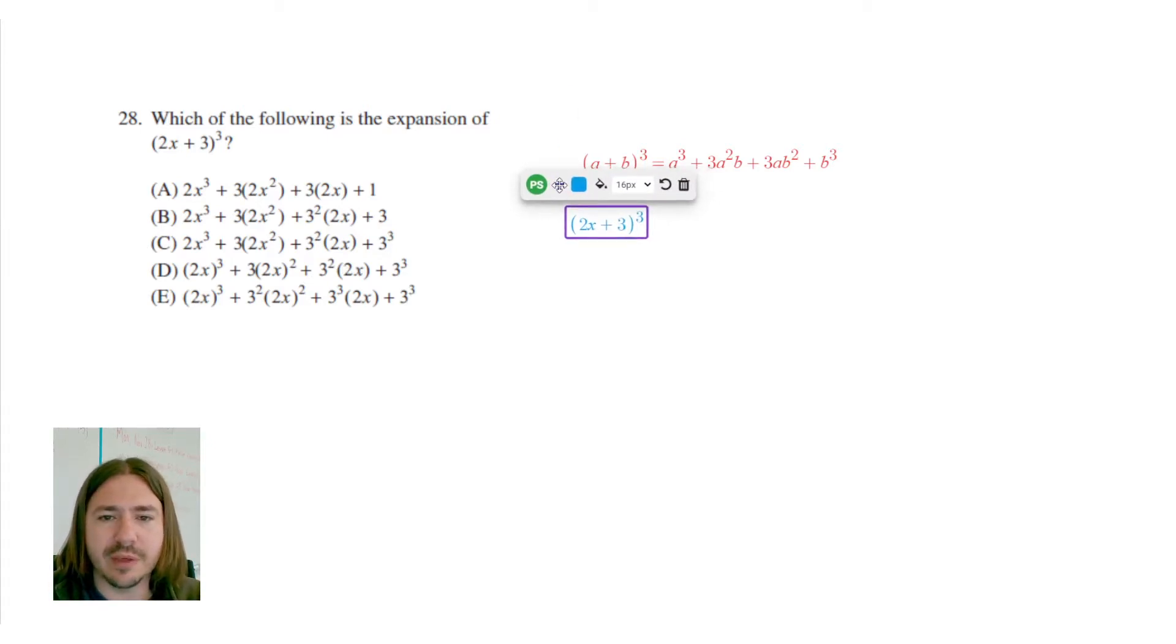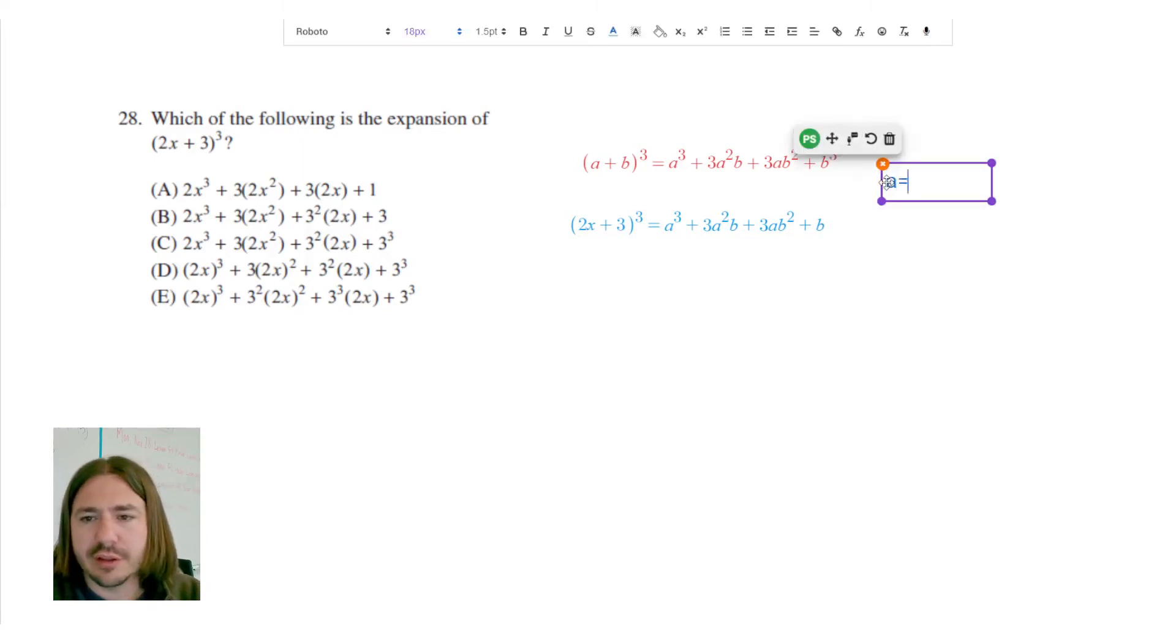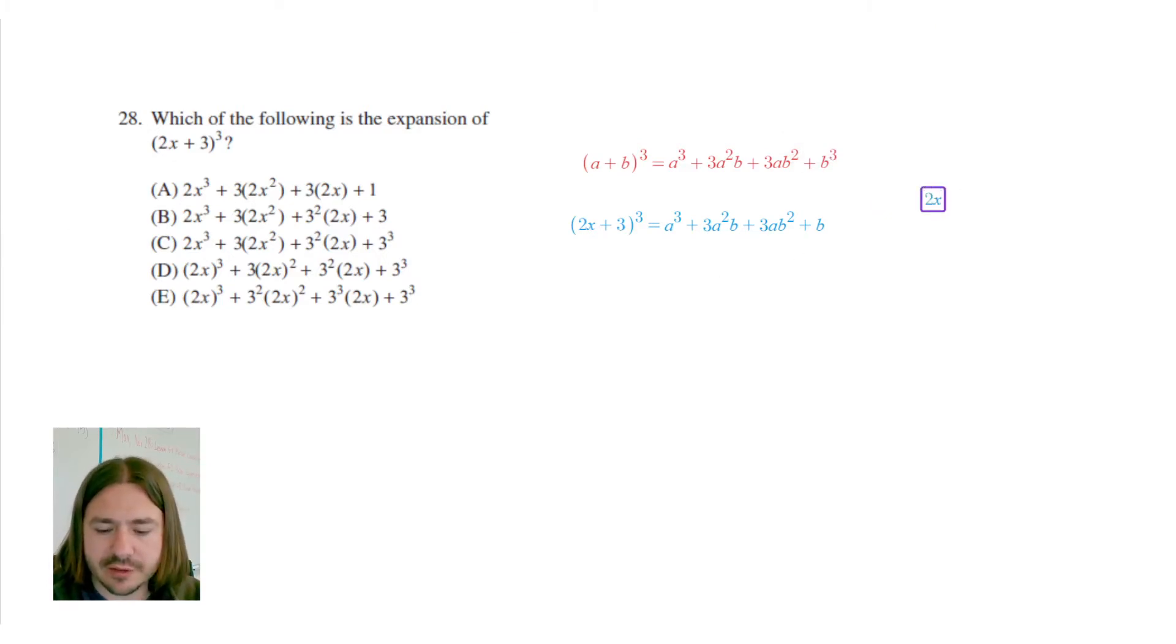It's just that instead of a and b, we have 2x and 3. So I'm just going to rewrite this whole thing, except I'm going to make some replacements. I'm going to substitute 2x for a. So 2x is going to be my a. So a is going to be 2x,